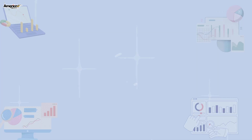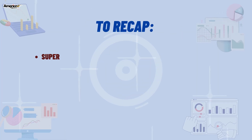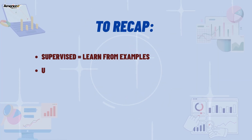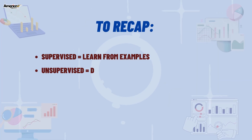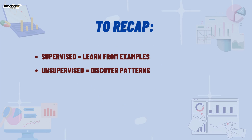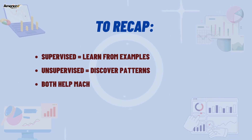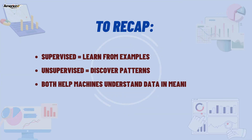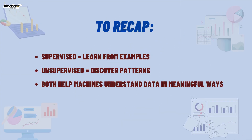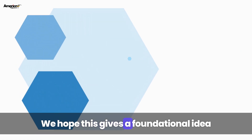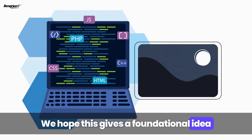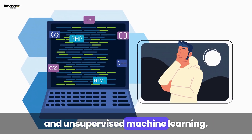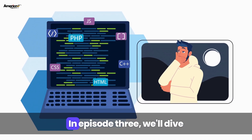To recap: supervised means learn from examples; unsupervised means discover patterns. Both help machines understand data in meaningful ways. We hope this gives a foundational idea of the differences between supervised and unsupervised machine learning.